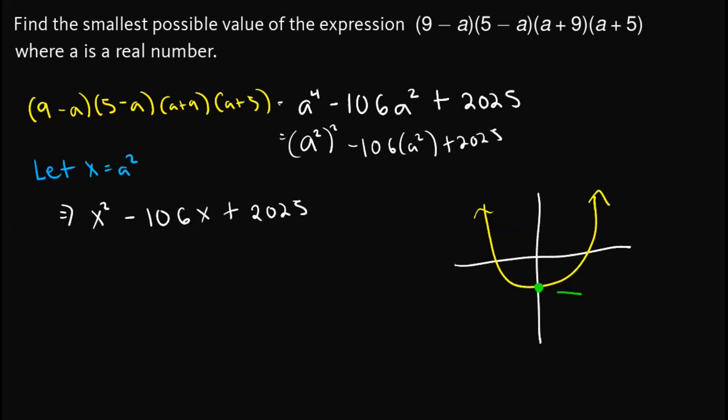So when we get this point out here, we know that this one is already its smallest possible value or its minimum. But the question is, how do we get that one?